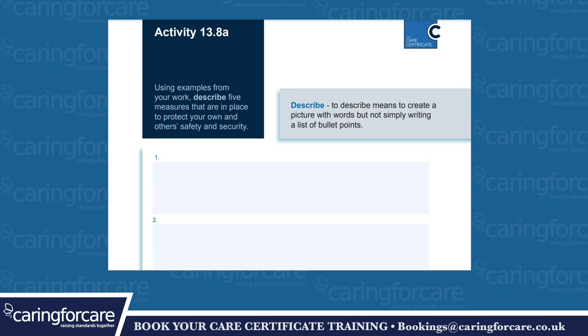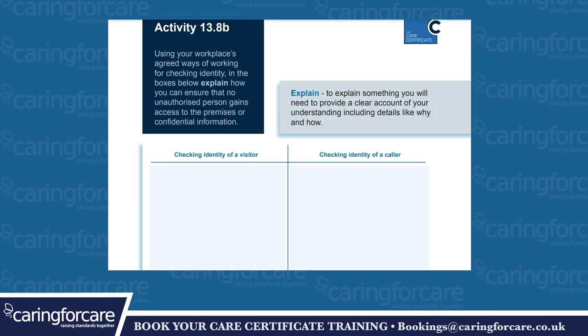Using examples from your workbook, describe five measures that are in place to protect your own and others' safety and security. Activity 13.8b: to explain something, you will need to provide a clear account of your understanding, including details like why and how. Using your workplace's agreed ways of working for checking identity, explain how you will ensure that no unauthorised person gains access to the premises or confidential information. Checking identity of a visitor. Checking identity of a caller.